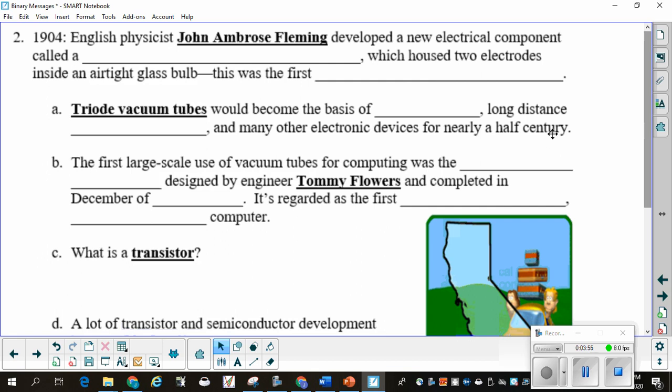In 1904, going back even farther, English physicist John Ambrose Fleming developed a new electrical component called, this is a crazy one, it's hard to spell, thermionic valve. It housed two electrodes and an airtight glass bulb. Airtight. This was your first vacuum tube.